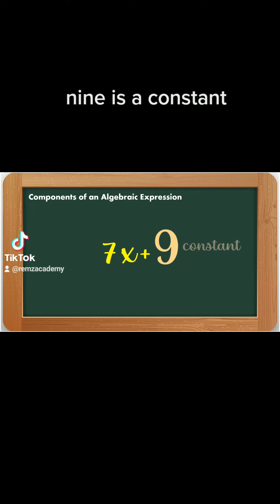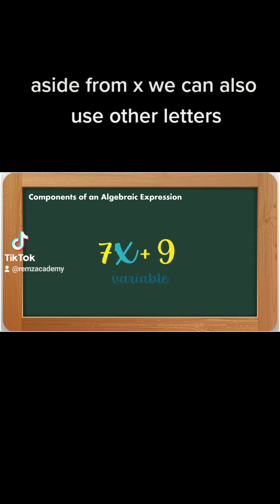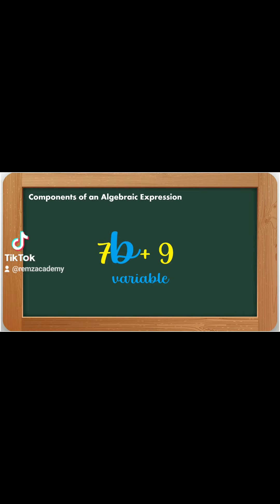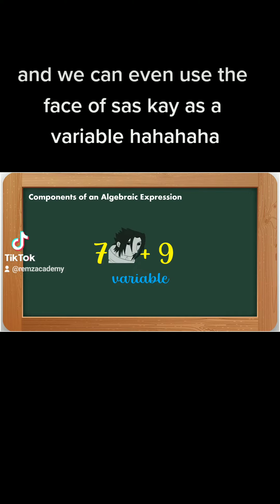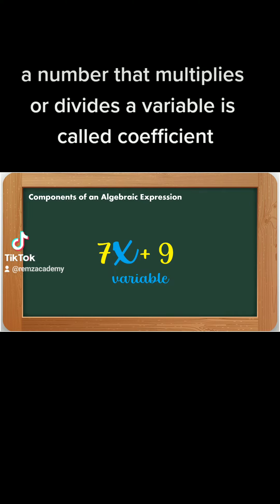9 is a constant. The letter x is a variable. Aside from x, we can also use other letters, like letter y, letter a, letter b. And we can even use a face or symbol as a variable. A number that multiplies or divides a variable is called a coefficient.